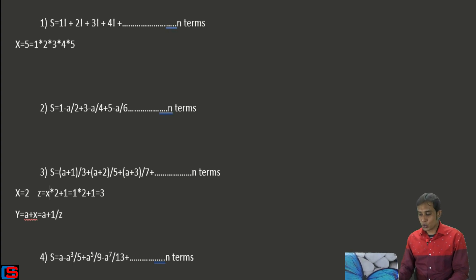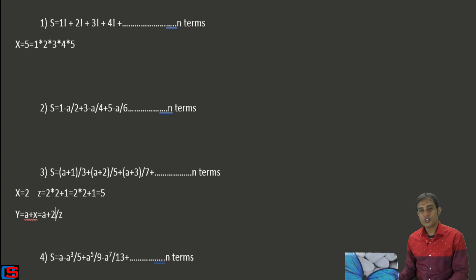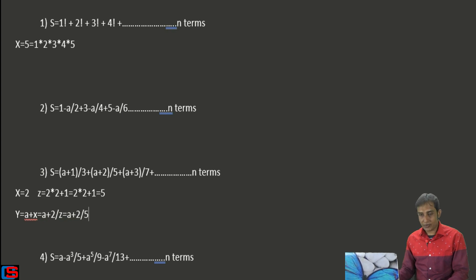Now suppose x equals 2. Then x into 2 plus 1 gives 2 into 2 plus 1 equals 5. So it becomes a plus 2 divided by z, which is divided by 5 — just like (a+2)/5. This is the logic for generating the series terms.